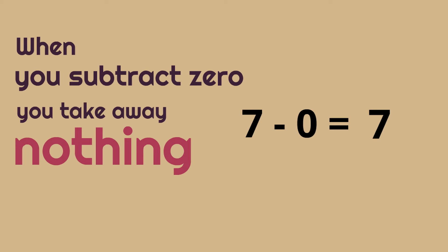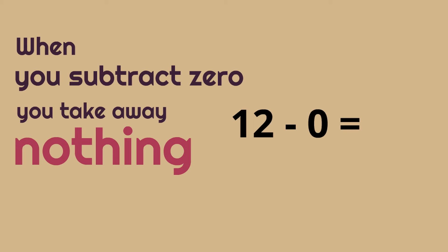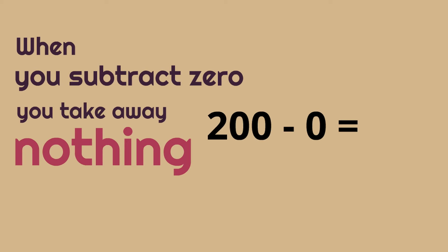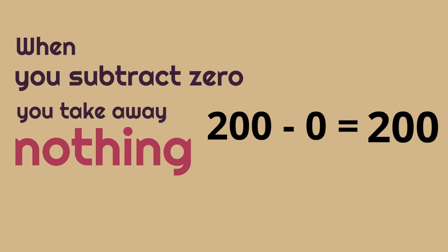Here's the next one: twelve minus zero. You should be getting the hang of it now. What would that be? It would be twelve, because you're subtracting zero. Twelve minus zero is twelve. This one looks big but it's just as easy as the other ones. What's two hundred minus zero? Two hundred minus zero is two hundred, because you're taking zero away. Great job!